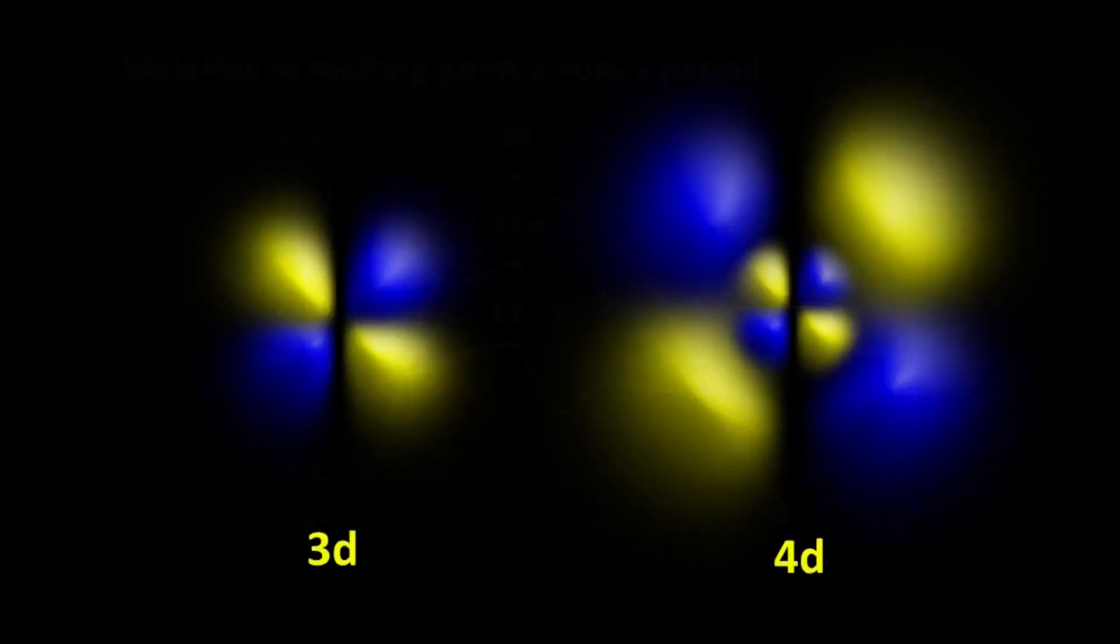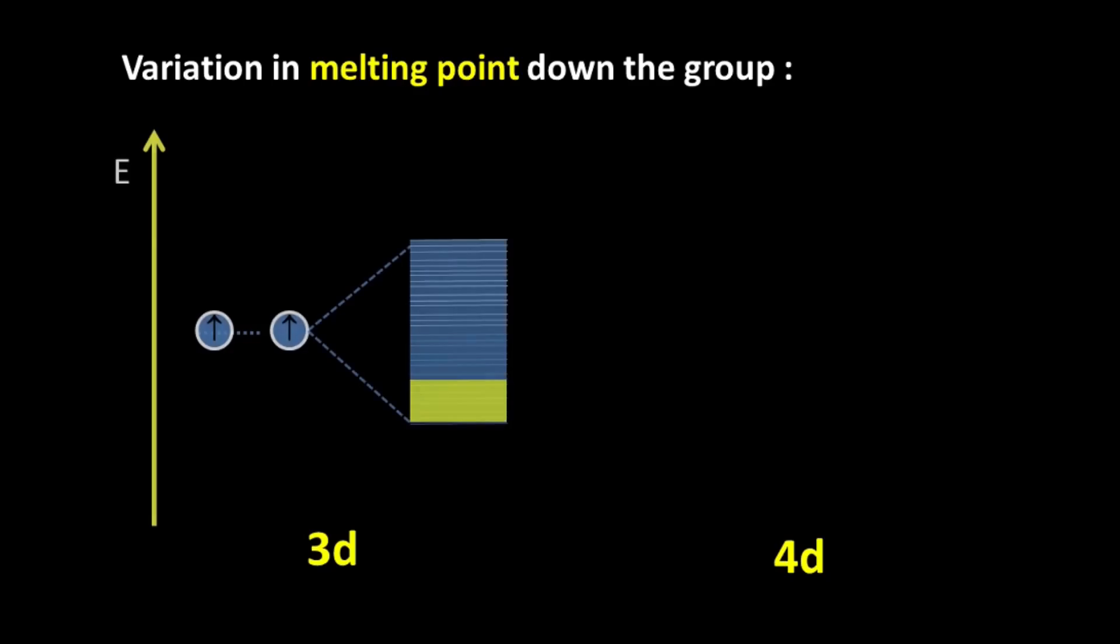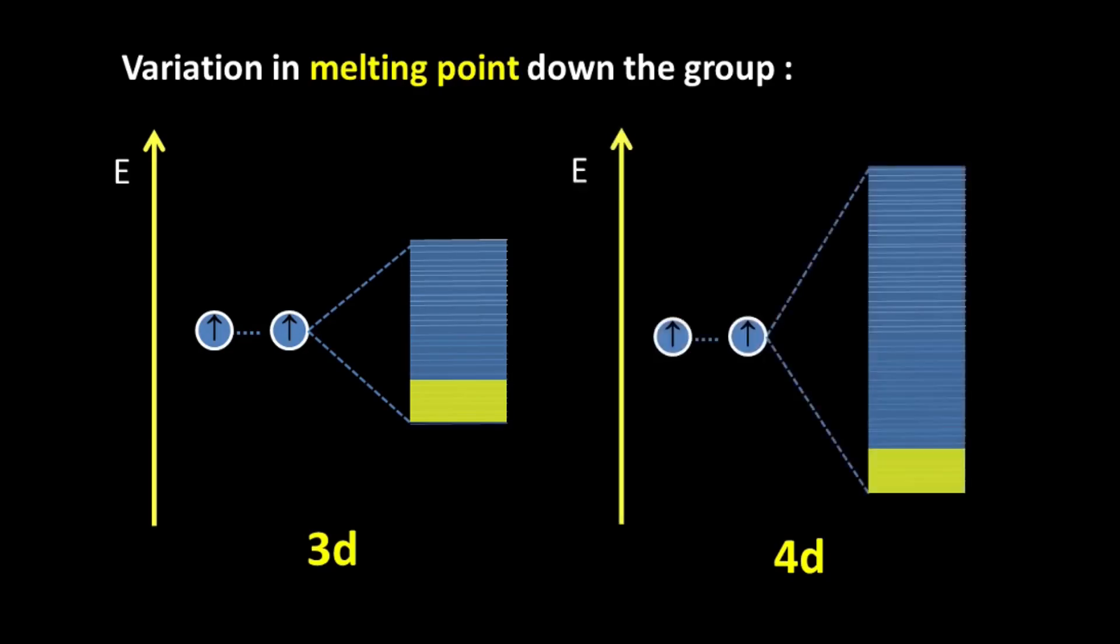Now this happens because the 4D as well as the 5D orbitals are much bigger. So therefore in the metal lattice, because they are more spread out, they can overlap much more effectively. And this increases the bandwidth of the giant molecular orbital that we are talking about. So what happens is that because the orbitals interact much more, the energy level of the bonding molecular orbitals are much lower in case of 4D and even much lower in case of 5D. So therefore the metallic bonding is going to be much stronger in 4D and 5D.